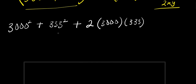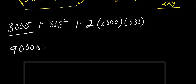From here we need to find the value of 3000 squared. Now 3 squared is 9, and 1000 squared is 1 million, so 3000 squared gives us 9 million.